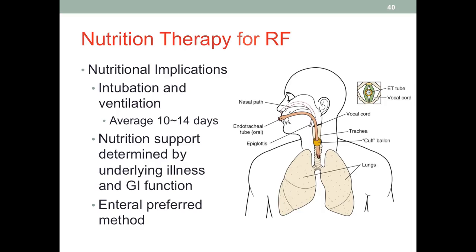In many cases, respiratory failure patients will require intubation and mechanical ventilation, which on average may last 10 to 14 days. In intubation, an endotracheal tube goes in through the mouth and ends in the trachea, ensuring that ventilation or oxygen therapy travels down the right path rather than into the GI tract. This figure shows where the tube is inserted — the tracheal tube is inserted between the vocal cords.